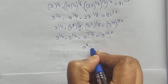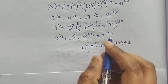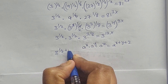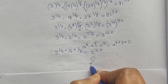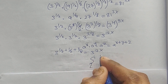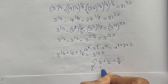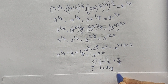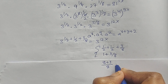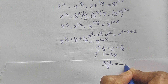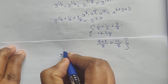We know the formula: 8 to the power of x times 8 to the power of y times 8 to the power of z equals 8 to the power of x plus y plus z. Applying this: 3 to the power of 1/2 plus 1/2 plus 3/8 equals 3 to the power of 12x. Adding the fractions: 1/2 plus 1/2 equals 1, and 1 plus 3/8 equals 11/8. So 3 to the power of 11/8 equals 3 to the power of 12x.